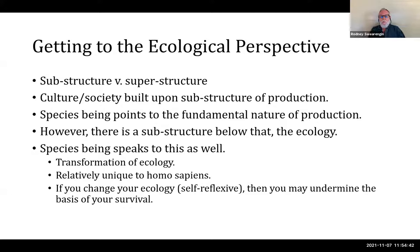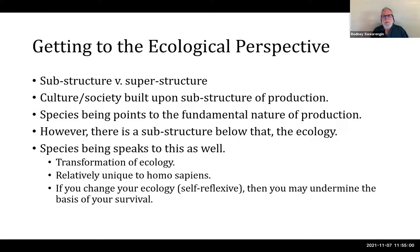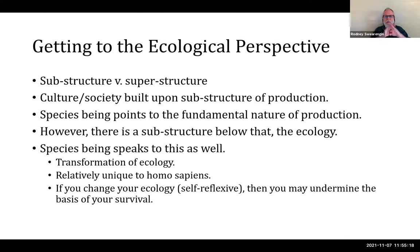Human beings like to transform the world, and in capitalism with the industrial revolution, that modification of the world becomes rather extreme — so extreme that we've changed the climate, we're changing the ecology. We're killing off millions of species of animals. We're in a geological phase of mass extinction, so the geological record is going to show that species went extinct all of a sudden, beginning with the rise of capitalism.